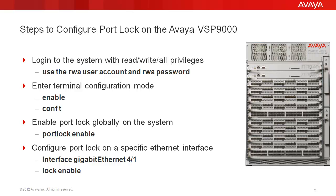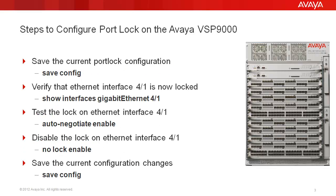Next, we'll configure port lock on a specific Ethernet interface. In our example, we'll be locking slot 4 port 1. We'll save the current port lock configuration using the save config command. We'll verify that Ethernet interface slot 4 port 1 is now locked using the show interface command.